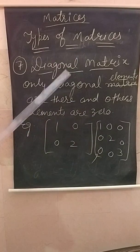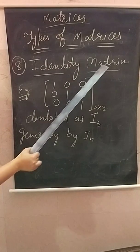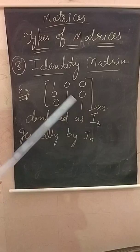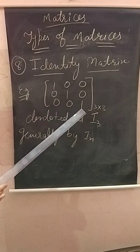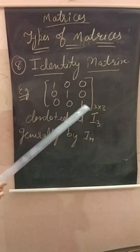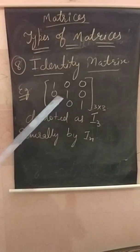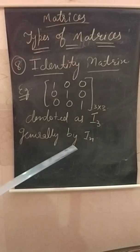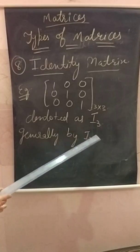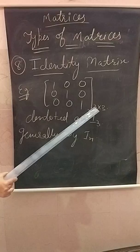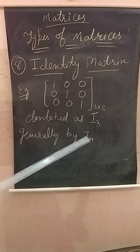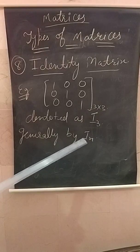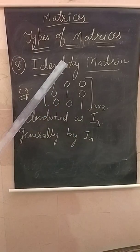Next is the identity matrix. In this matrix, all diagonal elements equal one. For example, a three by three identity matrix is denoted as I₃. Generally denoted by Iₙ, where n is the order of the matrix — if three by three then I₃, if four by four then I₄, if five by five then I₅. This is called the identity matrix.